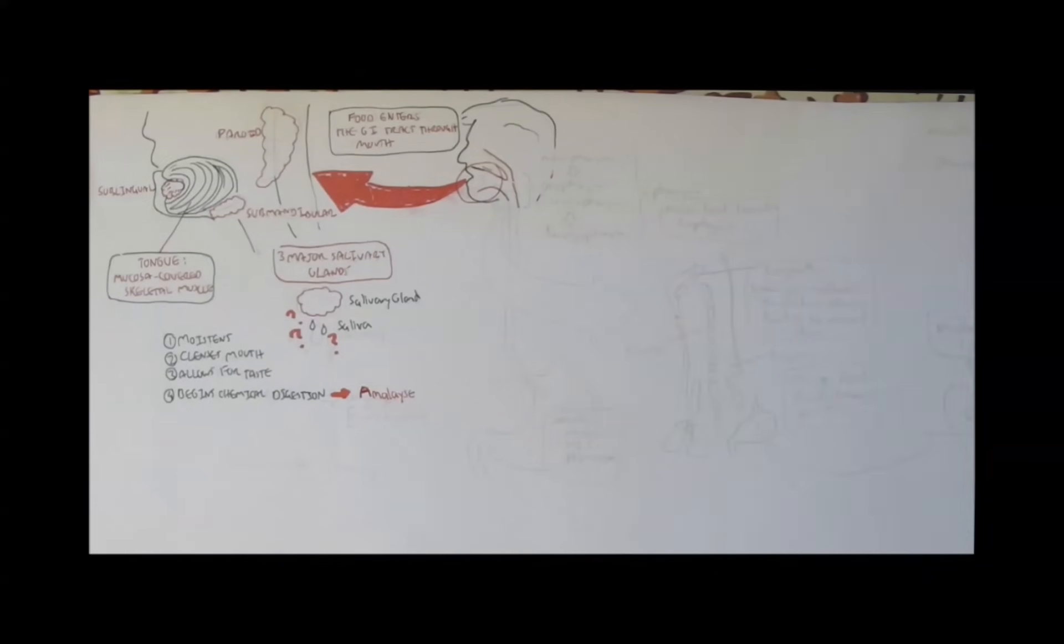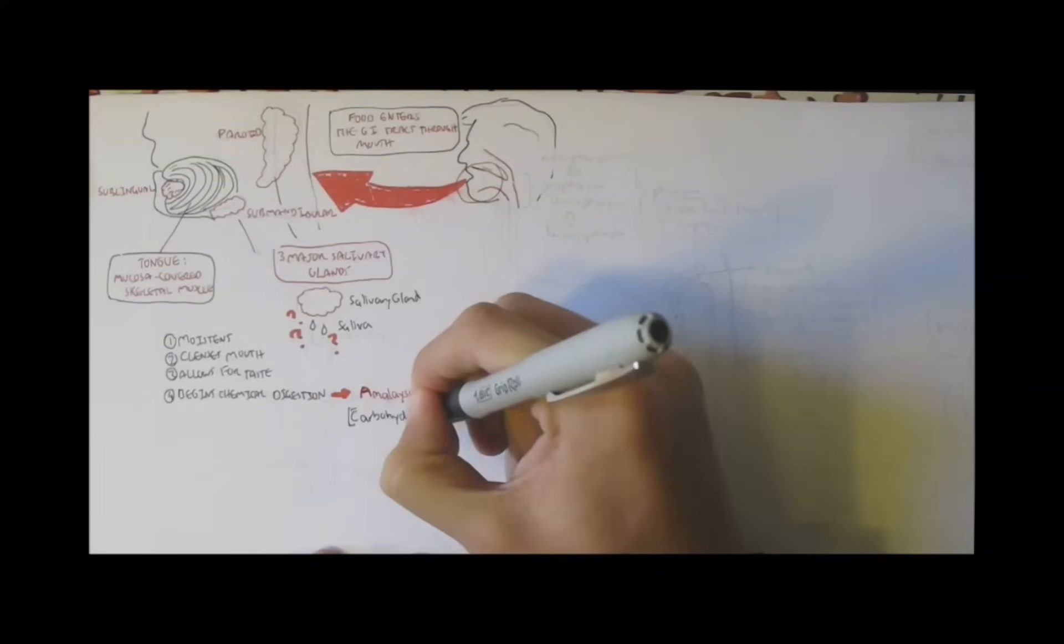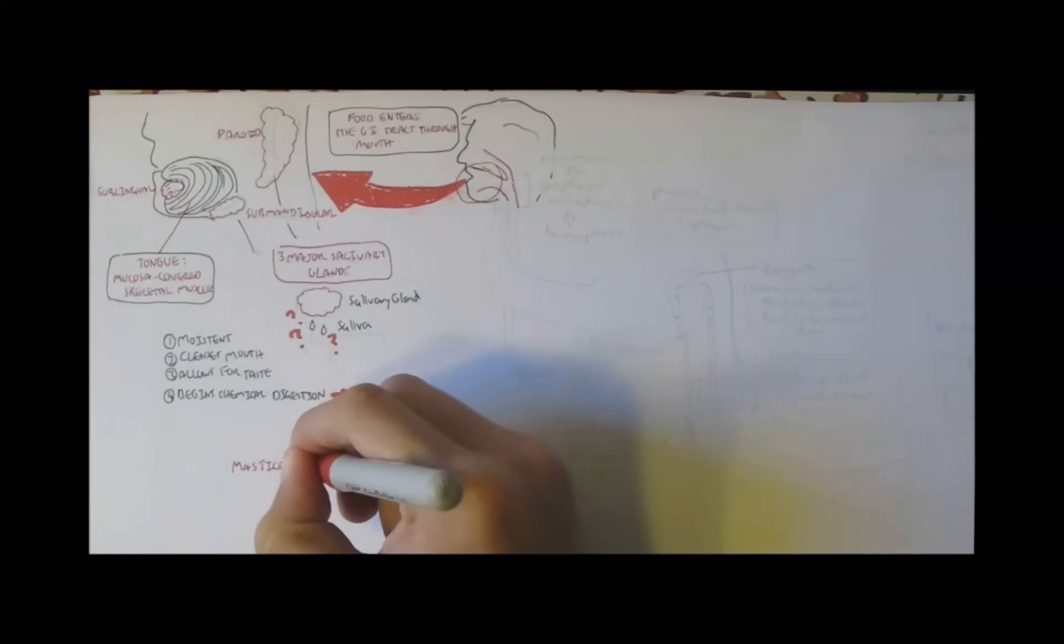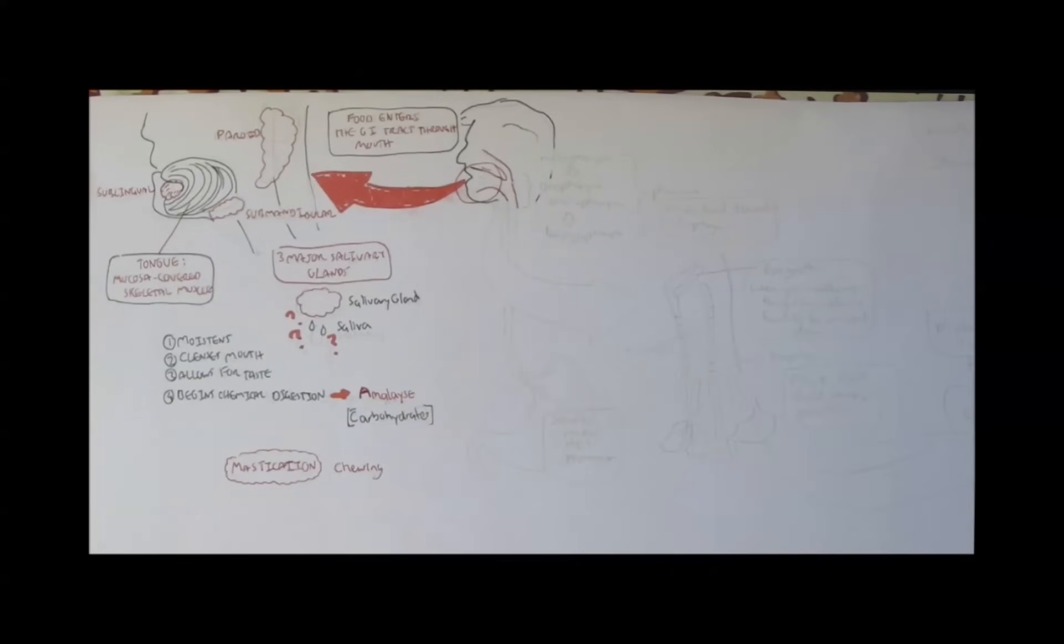But most importantly, it contains amylase. And amylase is an enzyme in the mouth that begins the digestive process for carbs. And you also have the teeth, which helps in mastication, the chewing. Mastication means chewing.